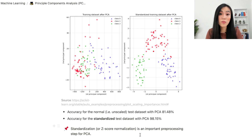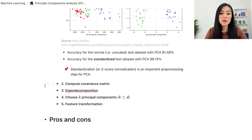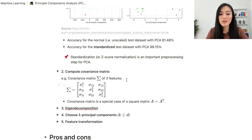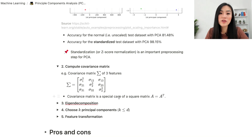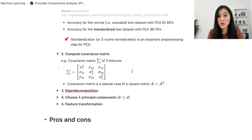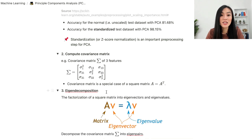Step two is to compute the covariance matrix of the original features. For example, with three features, the covariance matrix is a symmetric square matrix — identical to its transpose. Step three is to decompose the covariance matrix into eigenpairs through eigen decomposition, which is a factorization of a square matrix into eigenvectors and eigenvalues.